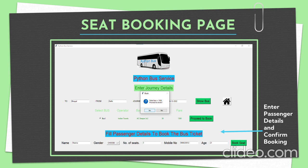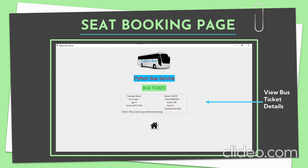The fare is 1500. If you wish, you can proceed to book. To proceed, you need to fill in your name, choose your gender, choose the number of seats, mobile number, and age. Once confirmed, it will prompt: the total fare will be — are you okay to proceed? If you click Yes, it will go to the next page; if No, it will go back to the home page or remain on this page.